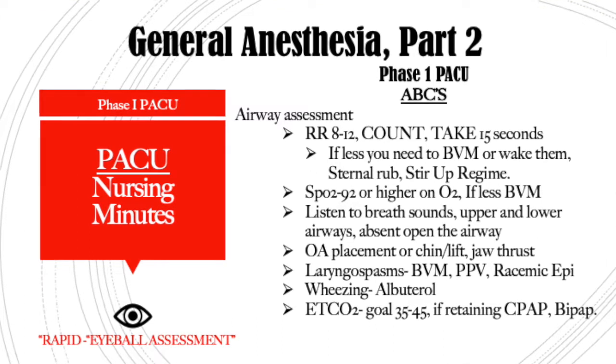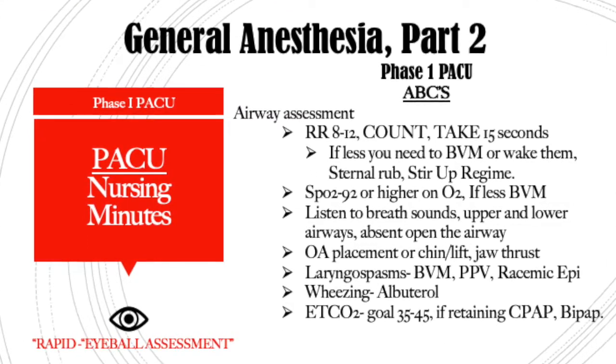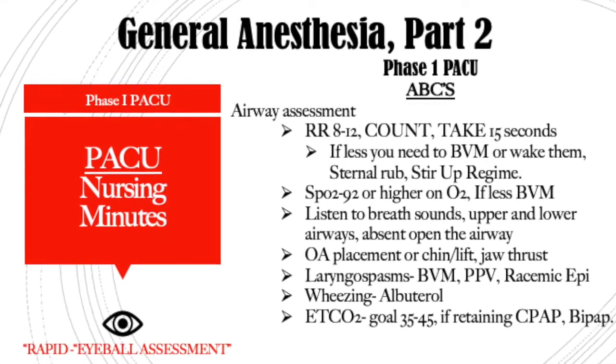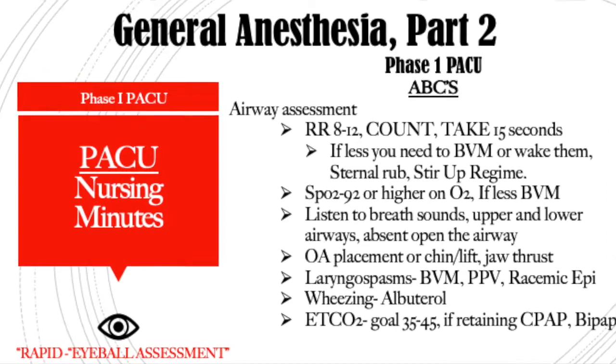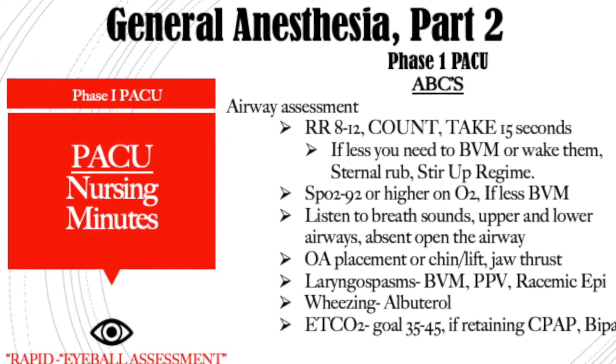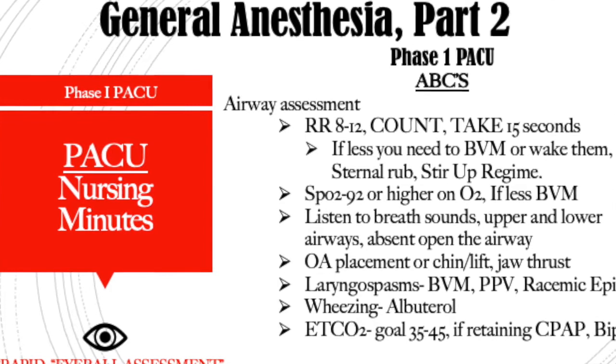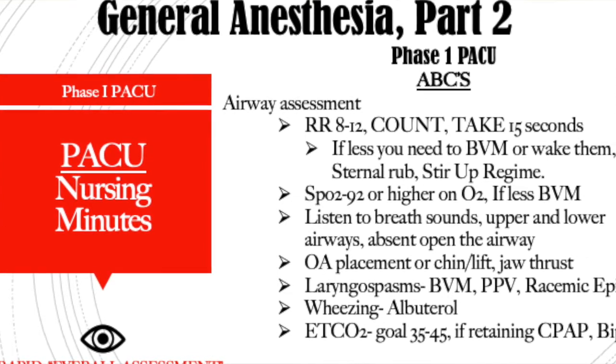What you want to do is first assess their respiratory drive. Is the rate above 8 to 10? Listen over their trachea, then over their upper airways — are they moving air down into their lungs? If they're not, you may need to do a jaw thrust or manual chin lift to open up the airway and reposition them. If they are not breathing, you would need to get out your ambu bag and bag valve mask ventilate the patient to do rescue breathing. The anesthesiologist may need to give an additional reversal at this time.